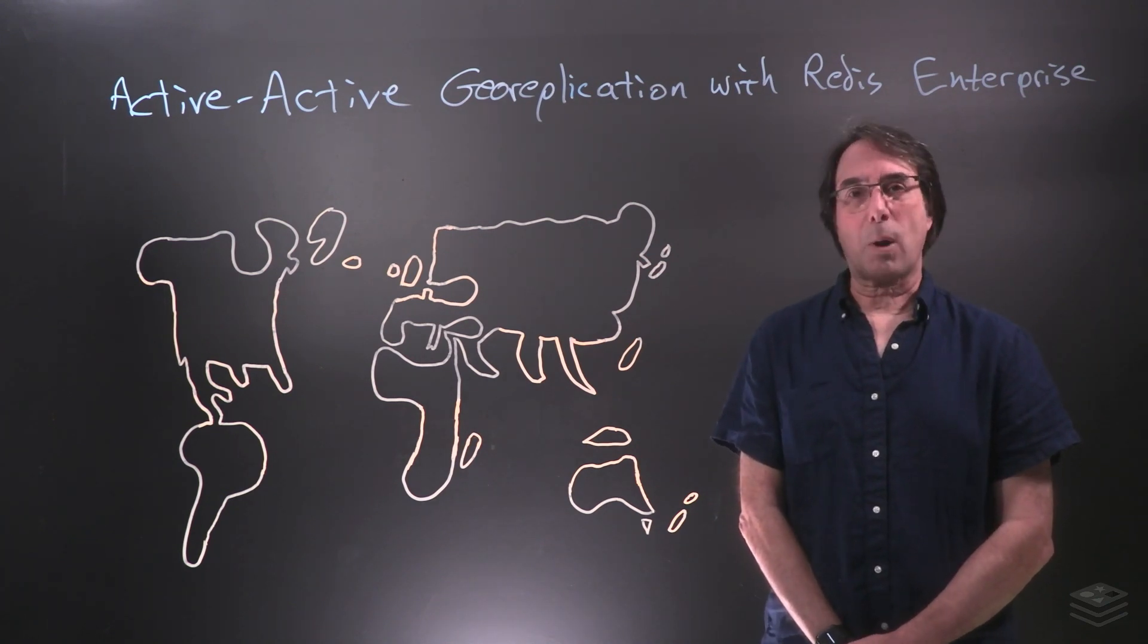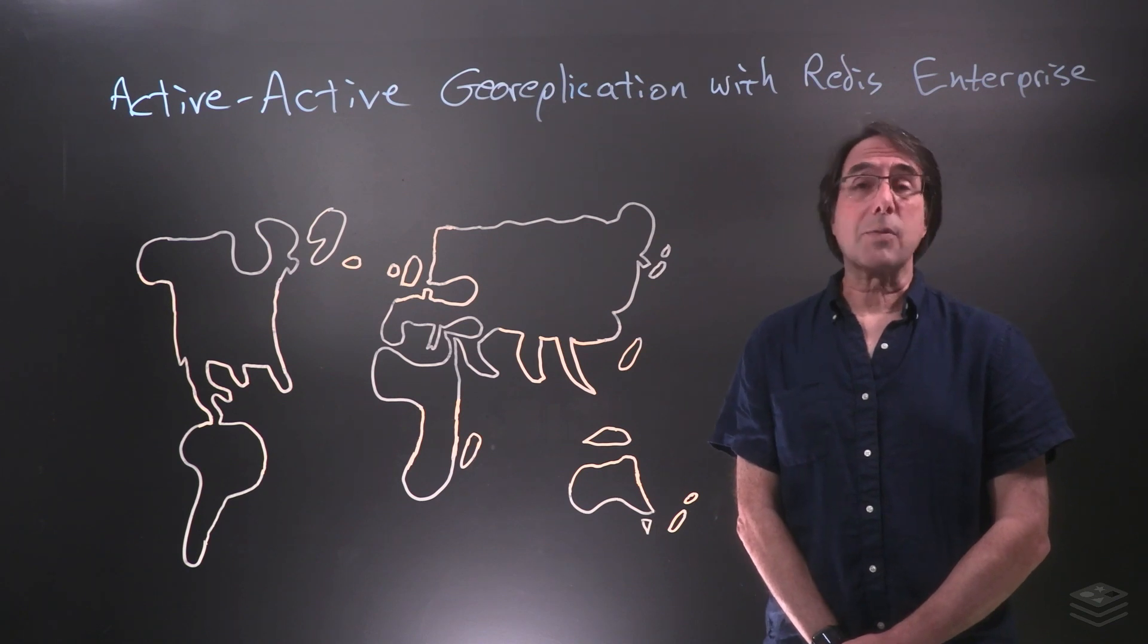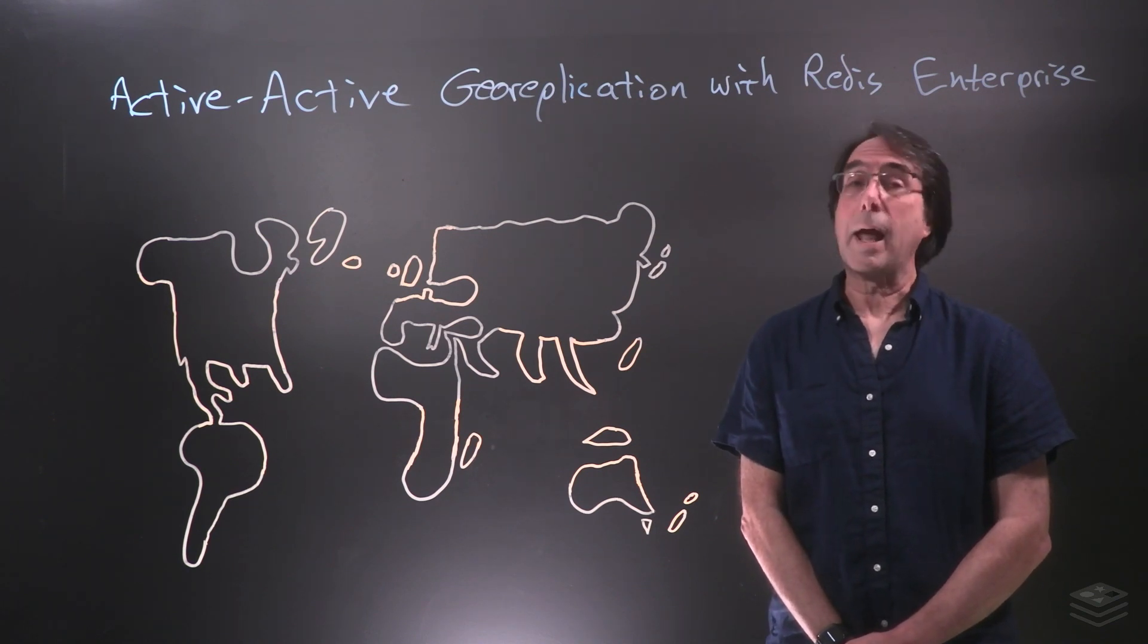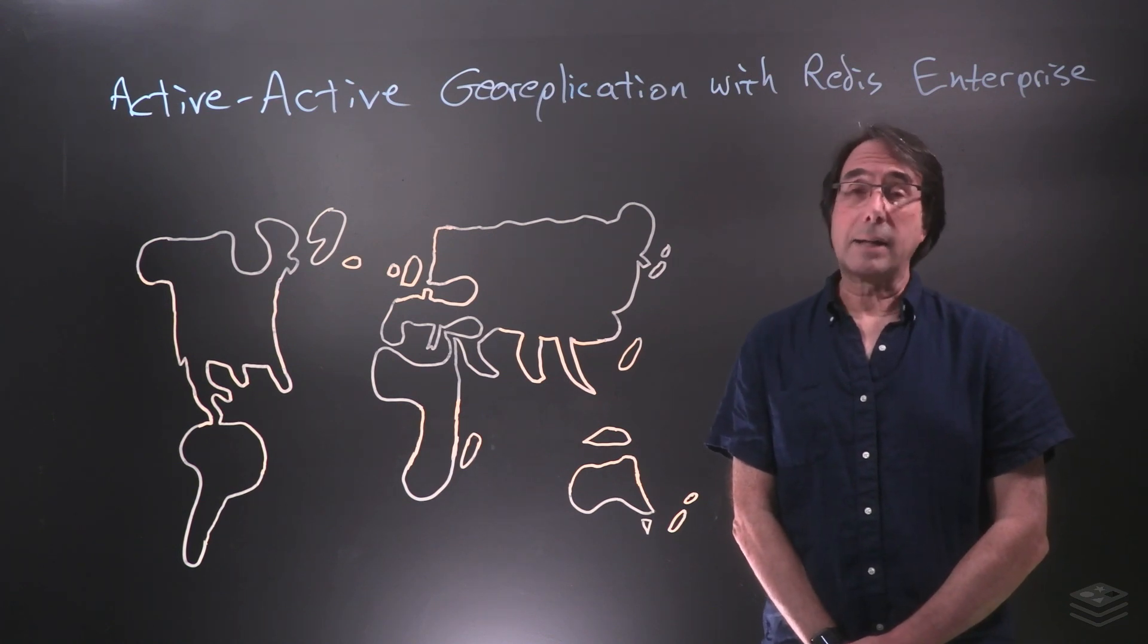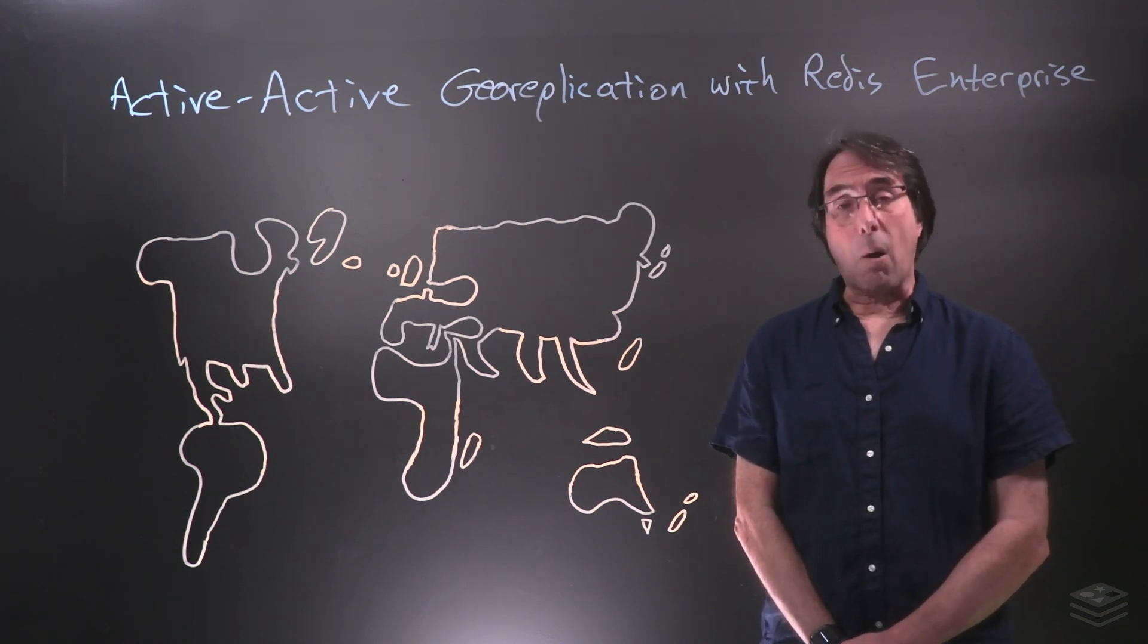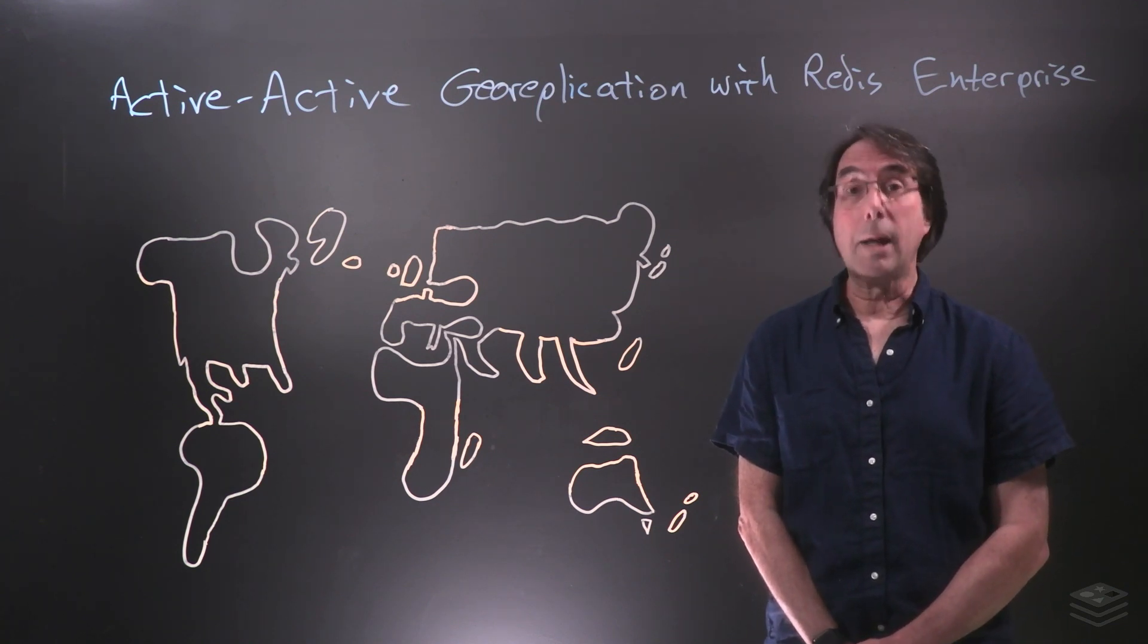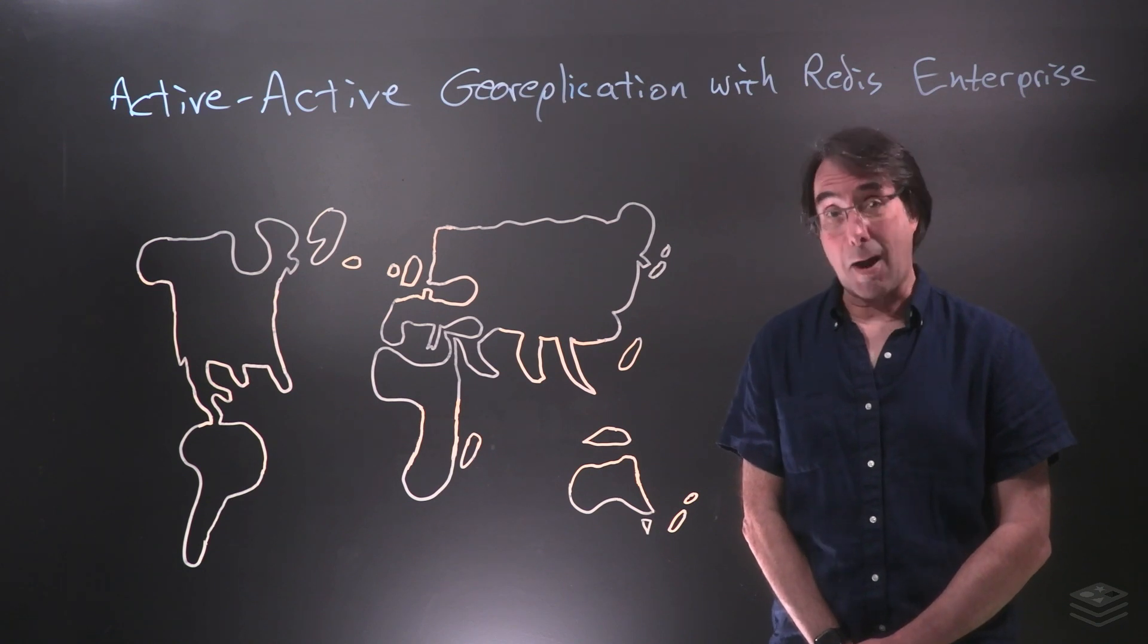ActiveActive Georeplication is a technology that lets you create replicas of your data and distribute them around the world. What makes ActiveActive special is that all of those replicas are writable, or to put it another way, anyone can change anything at any time.